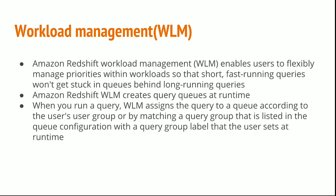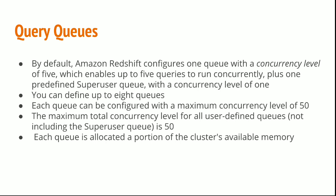Amazon Redshift WLM creates query queues at runtime. When you run a query, WLM assigns the query to a queue according to the user's user group or by matching a query group that is listed in the queue configuration with a query group label that the user sets at runtime. By default, Amazon Redshift configures one queue with a concurrency level of 5, which enables up to 5 queries to run concurrently, plus one predefined superuser queue with a concurrency level of 1.